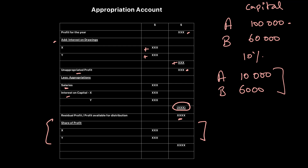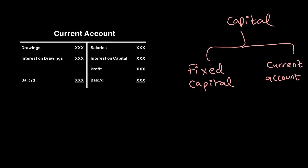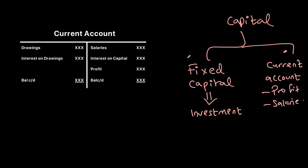Now let's look at the current account. For a partnership, capital can be divided into two parts. First is the fixed capital account — this records the investments made by each partner. Second is the current account, where all distributions are recorded: profits, salaries, drawings, and other appropriations during the year. The investment goes to the fixed capital account, while appropriations go to the current account.